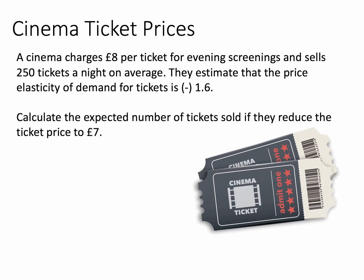The first question is to do with cinema ticket prices. We're told that a cinema charges £8 per ticket for their evening screenings and they sell 250 tickets a night on average. They've estimated that the elasticity of demand is minus 1.6. The minus we can ignore because we know that if price falls, for most products demand goes up. What matters to us is the coefficient of elasticity, in this case 1.6 — that's quite elastic, more than one.